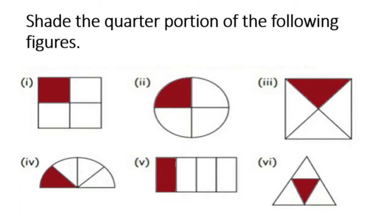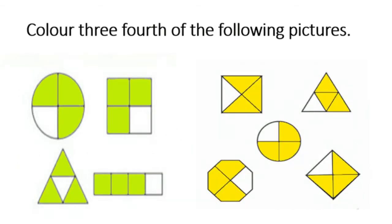Shade the quarter portion of the following figures. Every picture is divided into 4 equal parts, and the shaded portion represents quarter or one fourth. Colour 3 fourths of the following pictures. Each picture is divided into 4 equal parts and 3 parts are to be shaded — that is 3 fourths.